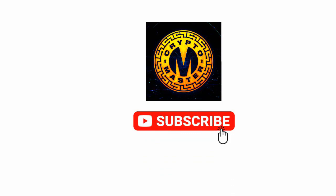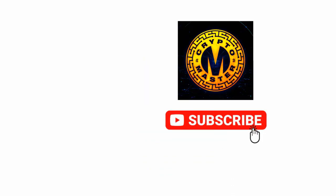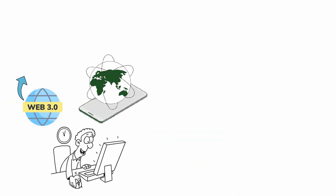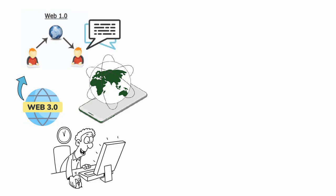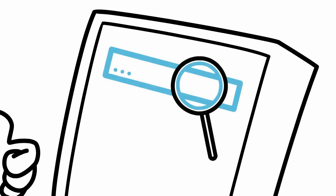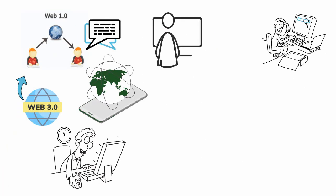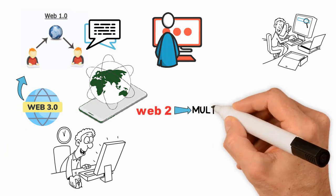Web 1.0 was essentially a bulletin board where people could create read-only text threads. In other words, the early web allowed us to search for information and read it. There was very little in the way of user interaction or content generation.